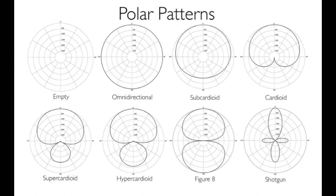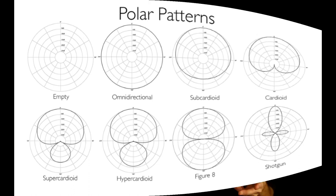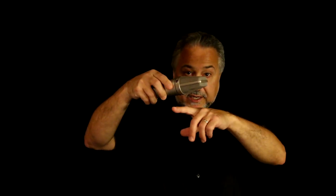The next mic to consider has a slightly smaller diaphragm — this is a U89. It has five patterns: figure-eight, regular cardioid, hypercardioid, supercardioid, and omni. It's a Swiss Army knife mic that sounds great on everything and is a really good drum mic I use all the time. It's a little bit lighter so you can do an XY or spaced pair more easily. That's the U89 Neumann.